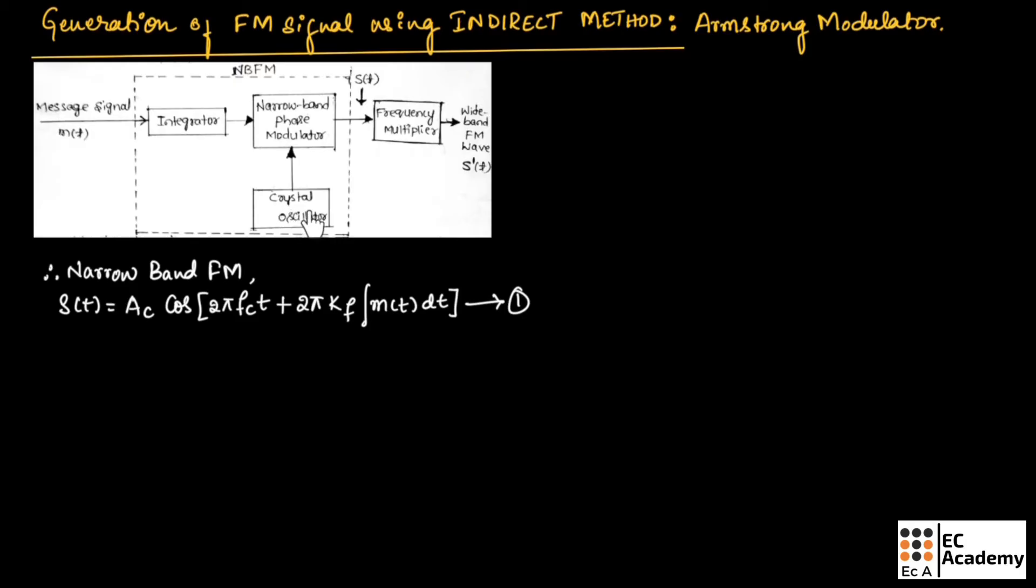Here, the crystal oscillator is used to provide the frequency stability. This narrow band FM is then given as input to the frequency multiplier and this frequency multiplier will produce the required wide band FM, which is indicated by S'.